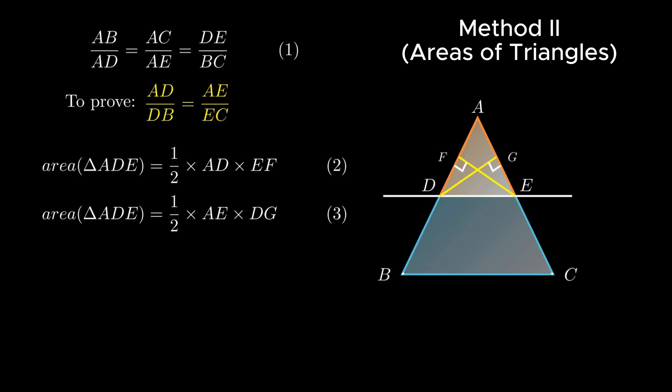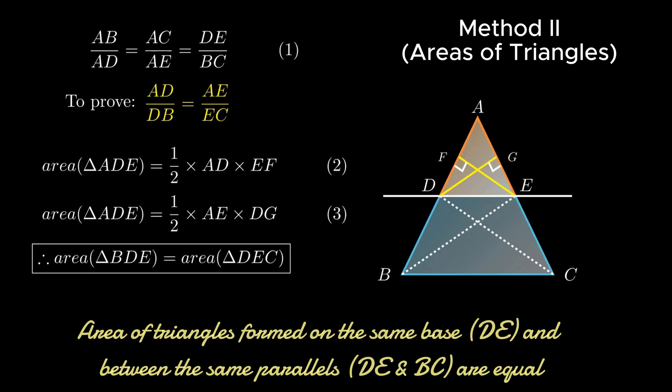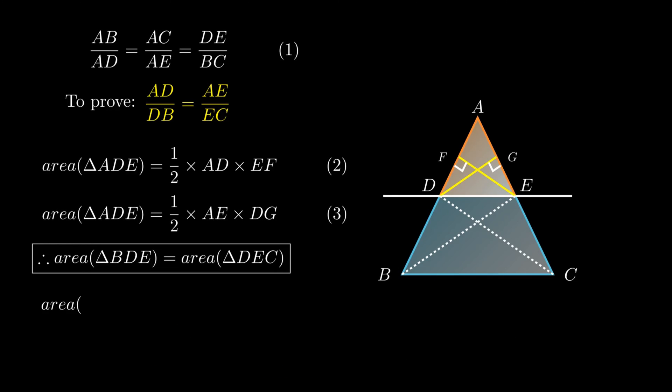Area of triangle ADE equals half times AE into DG. Now join point C to point D and point B to point E, resulting in triangle BDE and triangle DEC with the same base DE. By theorem, the area of triangles formed on the same base and between the same parallels are equal. Therefore area of triangle BDE equals area of triangle DEC. Area of triangle BDE can be represented as half times BD into EF.